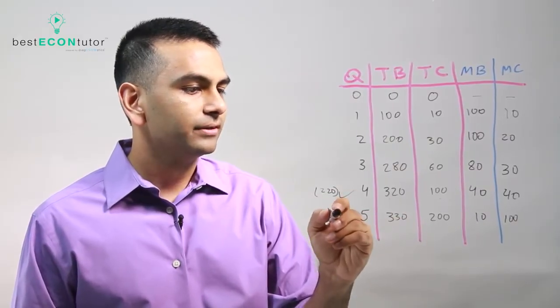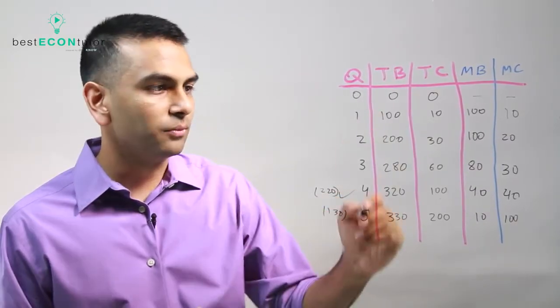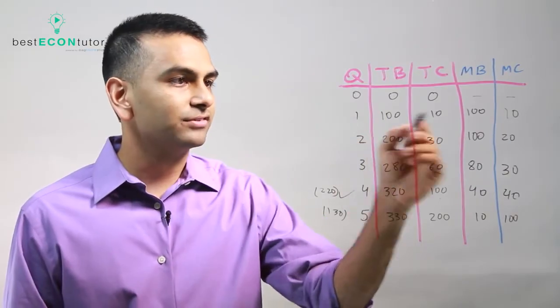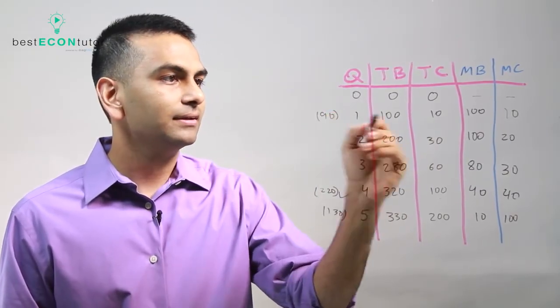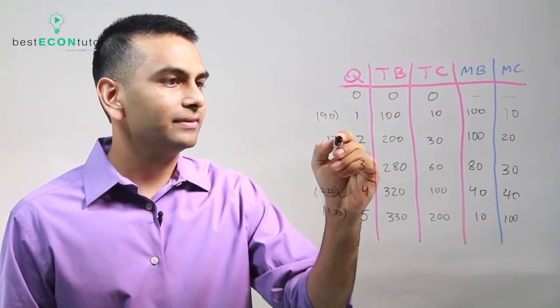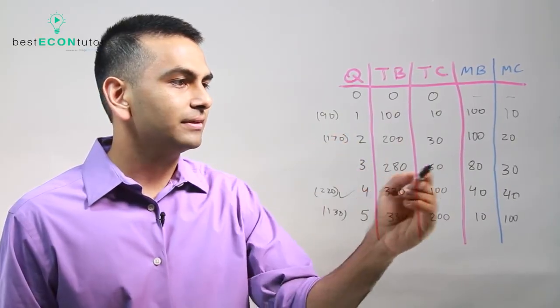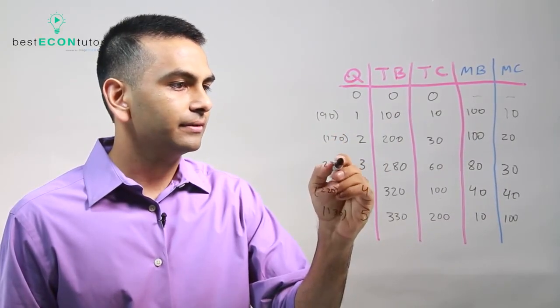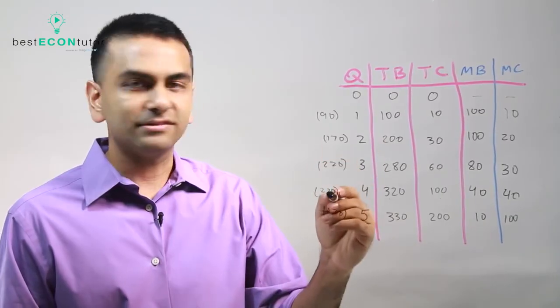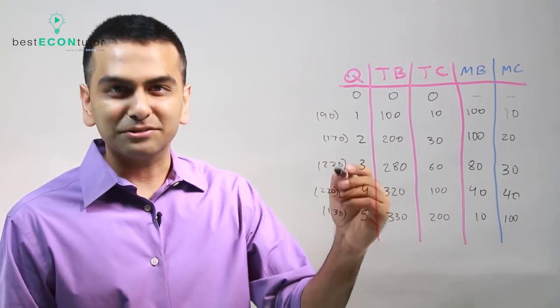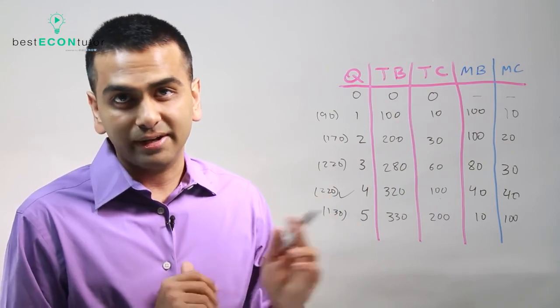Your profits here are 220, but your profits here are only 130, so notice your profits went down. In fact, if you wanted to look at your profits at every single point - here it's 90, your profits here, 200 minus 30 is 170, your profits here are 220. So out of all these, this is the best one. Again, technically three also gave you the same but we'll just choose the higher quantity if it's a tie.